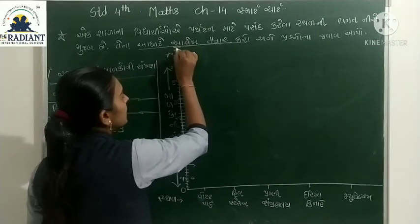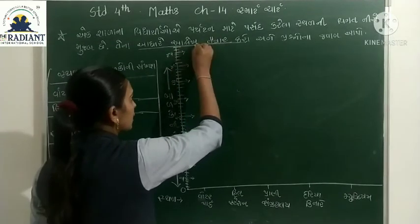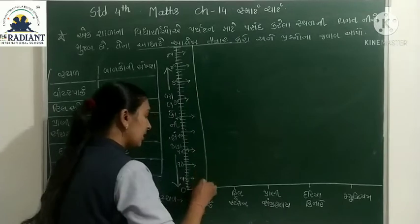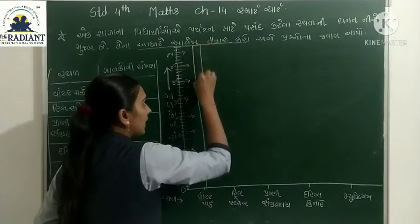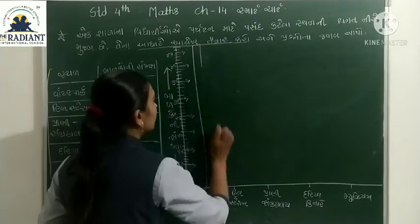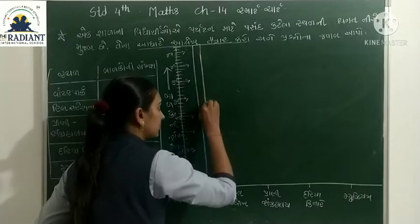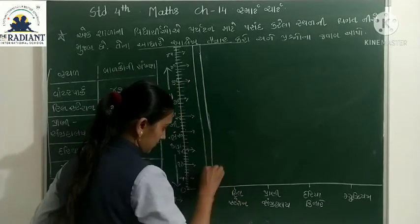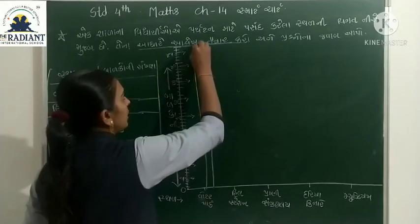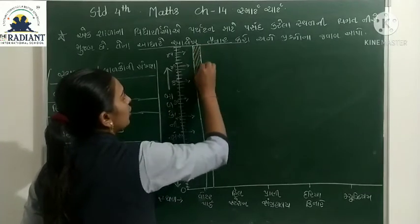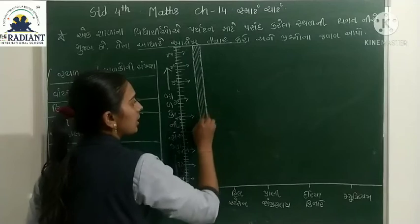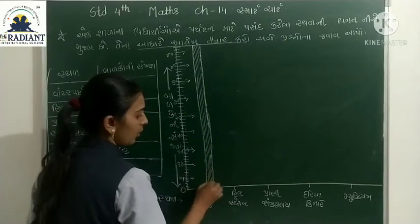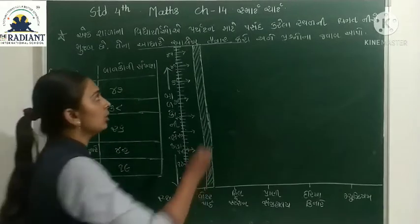45 સુધી કર્યું. પણ આપણી સૌથી મોટી સંખ્યા ક્યા છે? સૌથી મોટી સૂર્ત 43 - 43 છે. 43 - 45 - 46 - 43 છે. એટલે 43 ને આ રીતે ગ્રાફ પૂરો. ડિઝાઇન કરવી હોય તો તમે તમારી ઇચ્છા પ્રમાણે ડિઝાઇન કરી શકો.